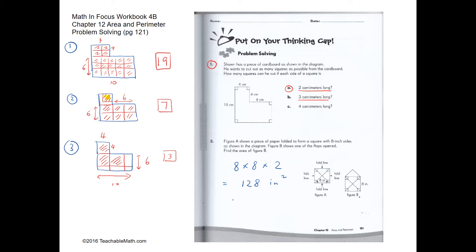If the squares are 4 centimeters long, counting gives us 1, 2, 3 — so 3 squares total.